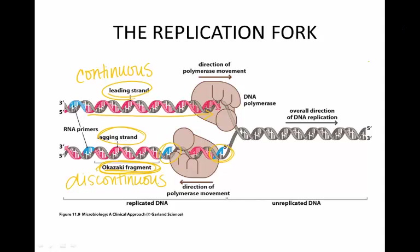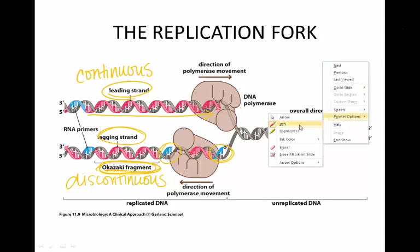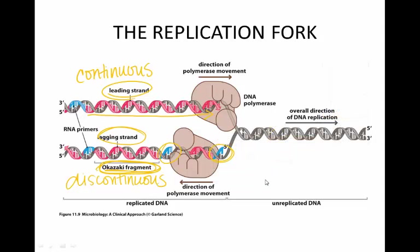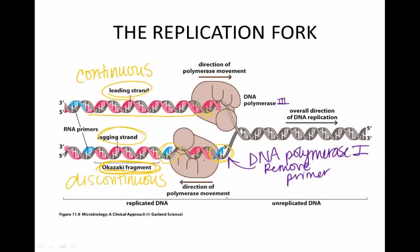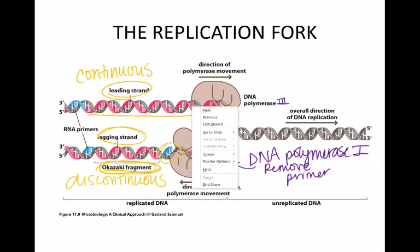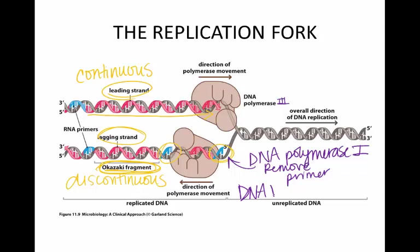Eventually a new polymerase will come in, specifically DNA polymerase 1. We're working with DNA polymerase 3 to add on all these nucleotides. DNA polymerase 1 will come in and remove those primers and replace them with strands of DNA because there is no RNA in our DNA. Those primers of RNA will be removed and replaced with DNA by polymerase 1.